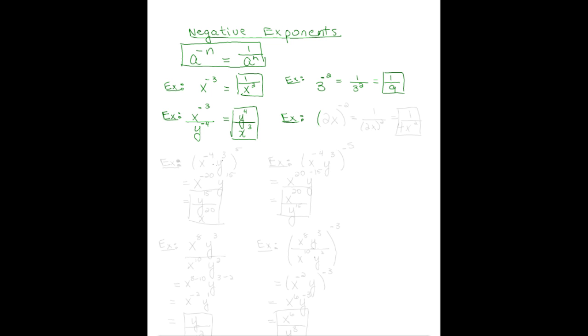We can extend this. If we have 2x, the whole thing raised to the negative 2 power, that's equal to 1 over 2x, the quantity squared, which is 1 over 4x squared.